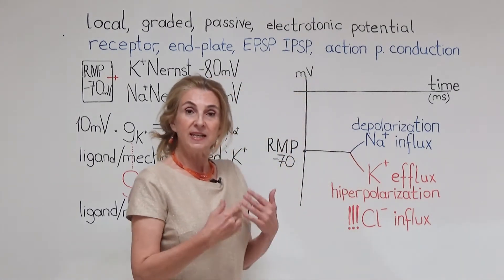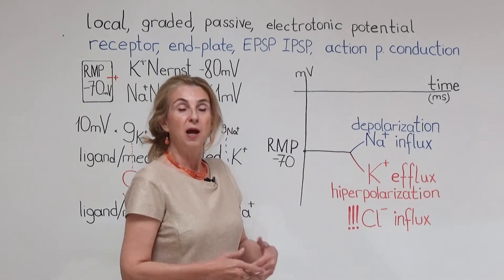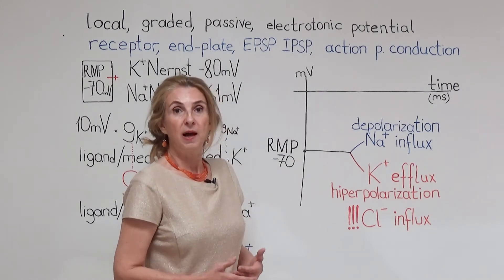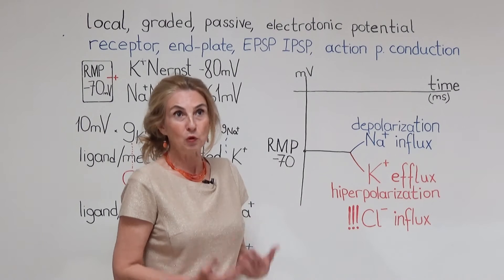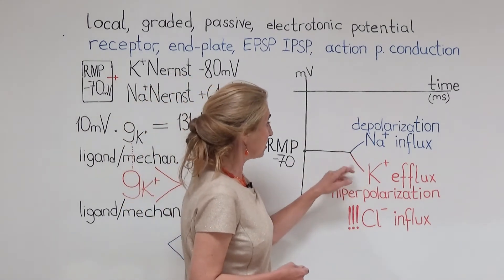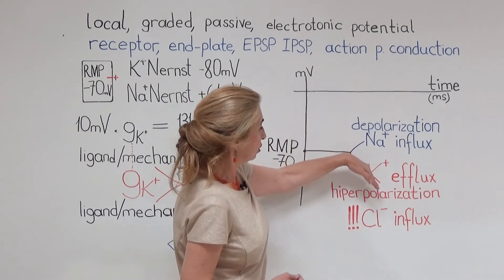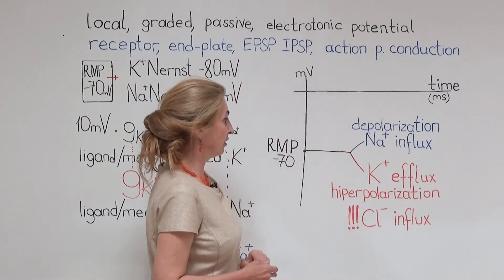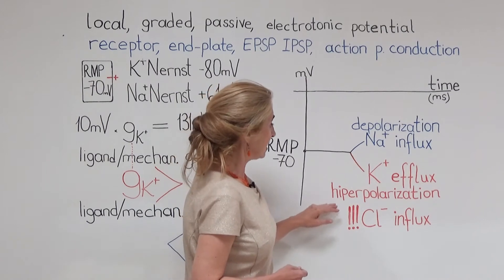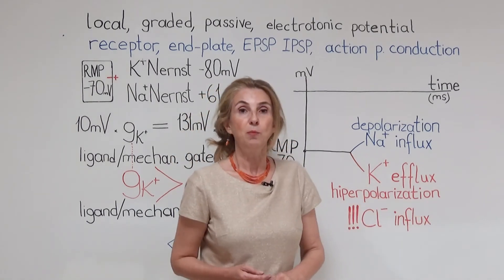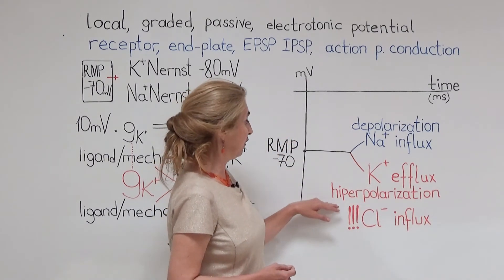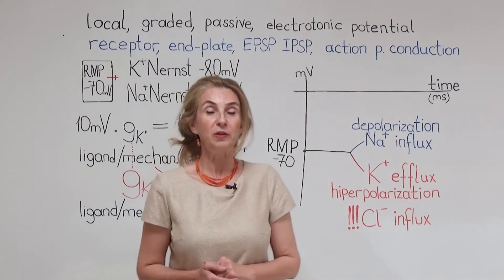When there is a net positive charge loss by the exit of potassium, potassium efflux is going to bring the membrane potential towards more negative values. A condition like this is called hyperpolarization. This is the first type of local potential.